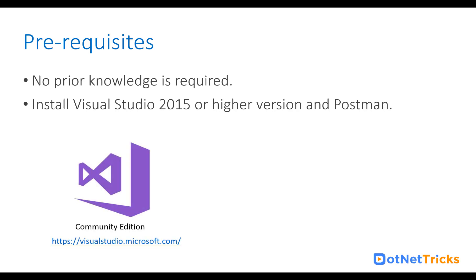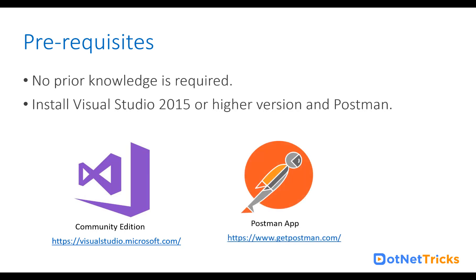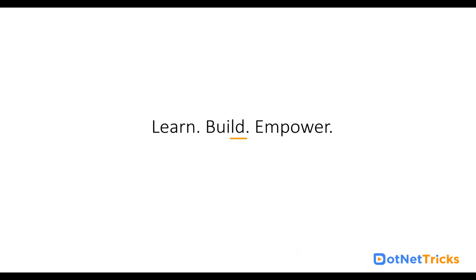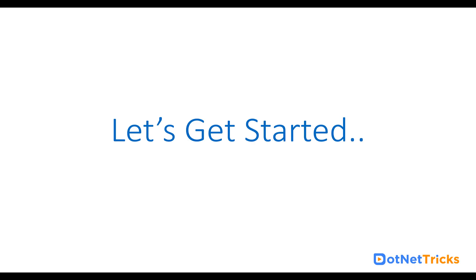Visual Studio latest version can be downloaded from VisualStudio.Microsoft.com and Postman can be downloaded from GetPostman.com. Just download the Postman app for testing our REST API. I hope you will join me in this journey to learn ASP.NET Web API. So, let's get started. Thank you.